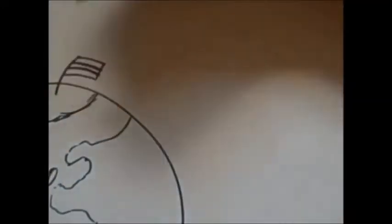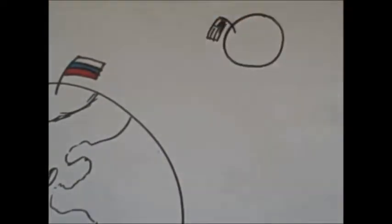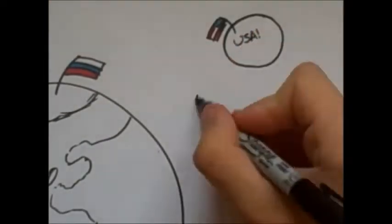By this idea, the Russians have a flag in the North Pole, so they own the North Pole. And the Americans have a flag in the moon, so they own the moon. But they don't. Not yet anyway.